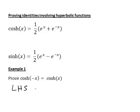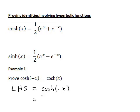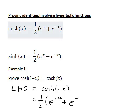A good way to set out the proof is to write down the side we are going to start with. So LHS equals cosh of negative x. We can then apply our formula to see what cosh of negative x is. Cosh of negative x means the argument of this function will be negative x, so that becomes a half e to the power of negative x plus e to the power of negative negative x.